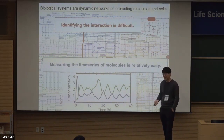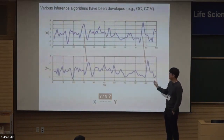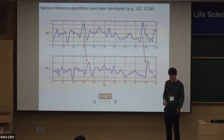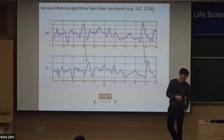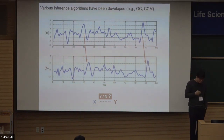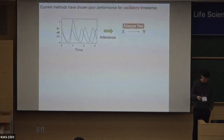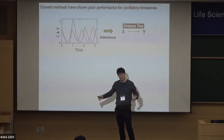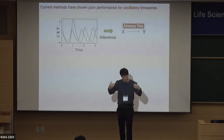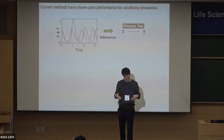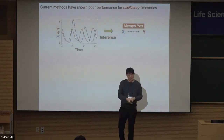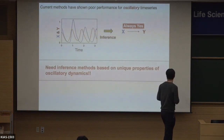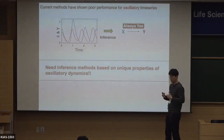Various inference algorithms have been used, including Granger causality and convergence cross mapping, which are based on the predictability concept. But all previous inference algorithms share a common problem. Because I study circadian rhythm, most genes have a 24-hour periodic expression. When I plug in the same-period gene expression profiles, previous inference algorithms always say causation exists — they cannot distinguish causation from synchrony between data sets. So we need a new method based on the unique properties of oscillatory dynamics.